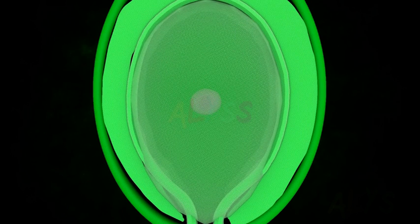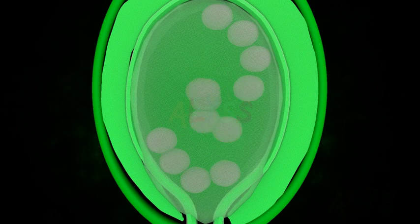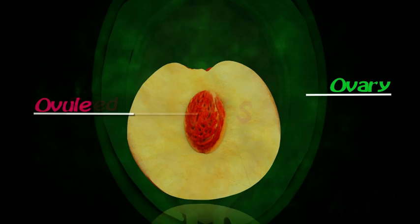Ovule contains a zygote, a fused male and female gamete structure. This zygote divides mitotically to form an embryo plant. The ovary changes to fruit with ovule as seeds.